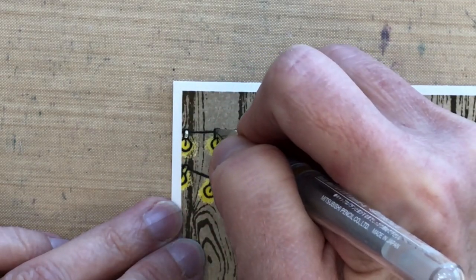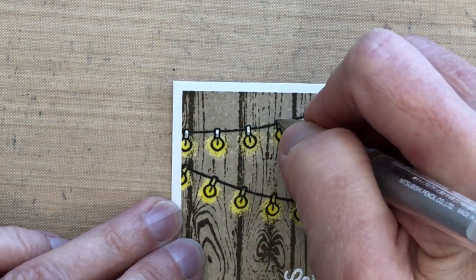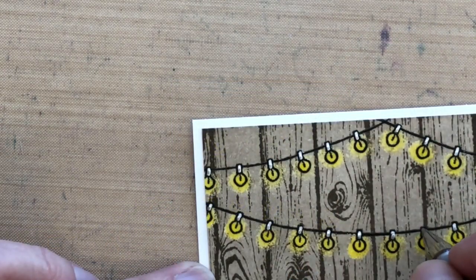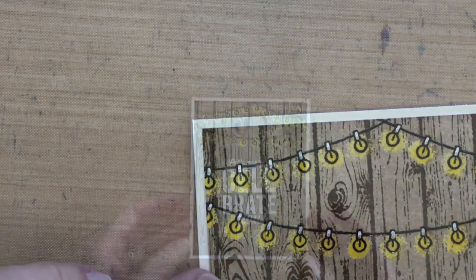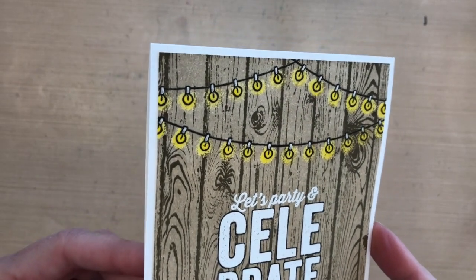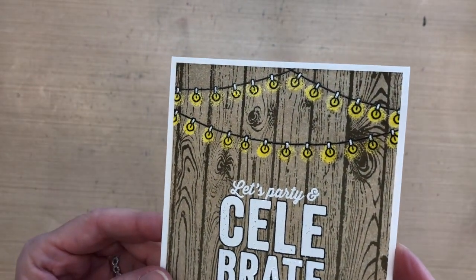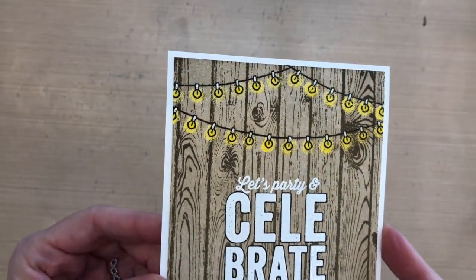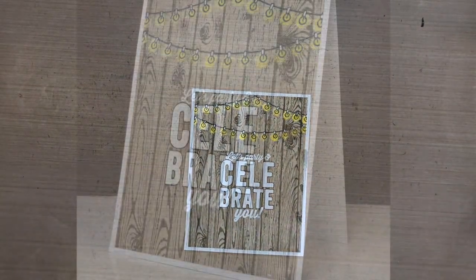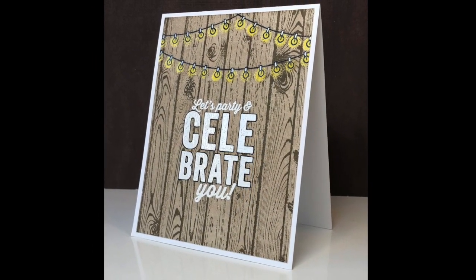I took a silver uniball gel pen and I just filled in those areas above the light bulbs just to kind of cover the brown that was there and make them stand out a little bit more. And that is the card for today. So I hope you enjoyed that and I will see you next time. Thanks for watching.